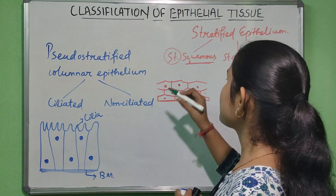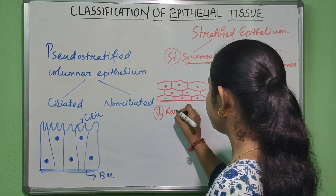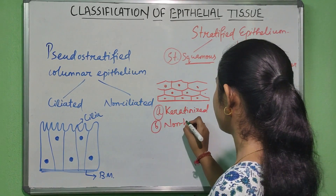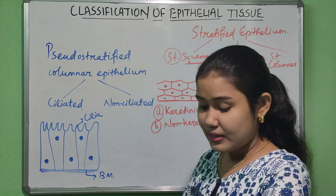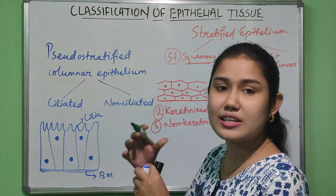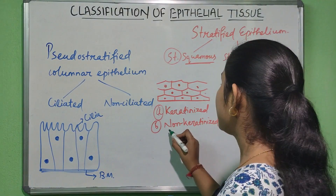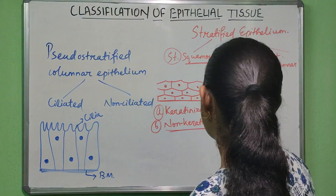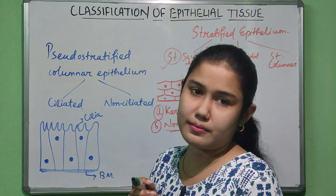Stratified squamous epithelium has two varieties: keratinized and non-keratinized. If keratin is present, it is keratinized — like the epithelium on the surface of the skin. Structures like the esophagus, mouth, tongue, and vagina have the non-keratinized variety. The main function of stratified squamous epithelium is protection.